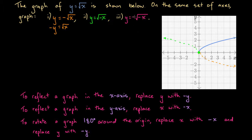What about the last one? y equals minus the square root of minus x. We can rewrite this by multiplying both sides by minus 1: minus y equals the square root of minus x. So y has been replaced with minus y, and x has been replaced with minus x. According to our last rule, to rotate a graph 180 degrees around the origin, replace x with minus x and y with minus y. So we're predicting this graph will be the same as the blue graph, rotated 180 degrees around the origin — something like this.